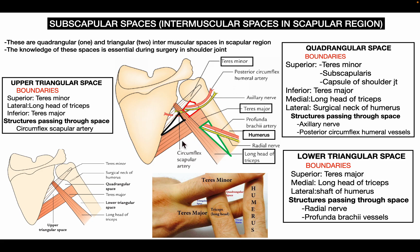The boundaries of the quadrangular space are: superiorly, formed by teres minor, subscapularis, and the capsule of the shoulder joint; inferiorly, by teres major; medially, by the long head of the triceps; and laterally, by the surgical neck of the humerus. The structures passing through this space are the axillary nerve and the posterior circumflex humeral vessels.